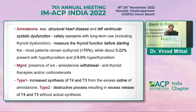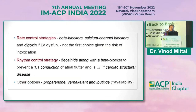Amiodarone-induced thyroid dysfunction has two types: Type 1 involves increased synthesis of T3 and T4 due to excess iodine in amiodarone; Type 2 is a destructive process involving excess release of T3 and T4. For rate control, beta-blockers are best; if not tolerated, calcium channel blockers and digoxin are used. For rhythm control, flecainide with beta-blockers, propafenone, vernakalant, and ibutilide are options.